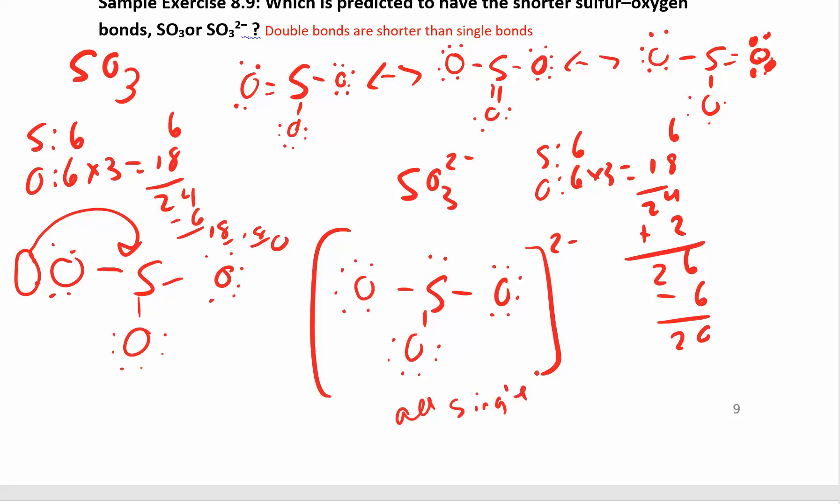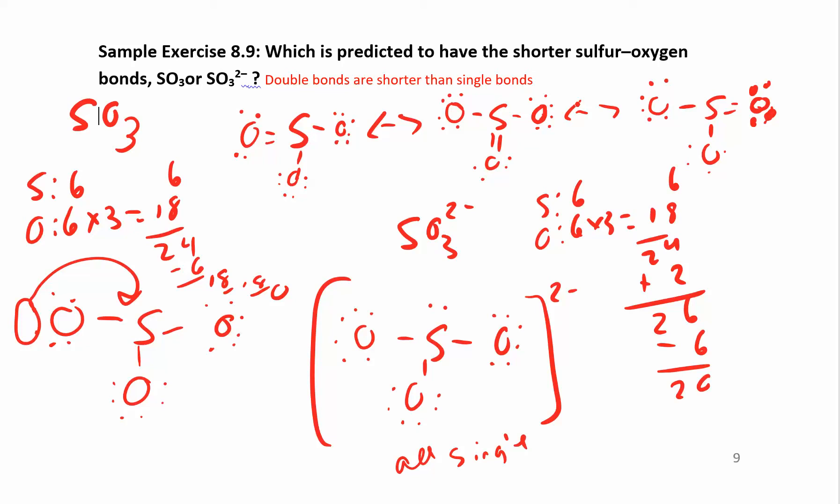Single bonds are longer than this guy up here, which is going to have two singles and a double, which really works out to be like a one and a third bond. So these guys would have shorter bonds up here. These ones would be shorter because there's a little bit of double bond character in each one of those bonds.